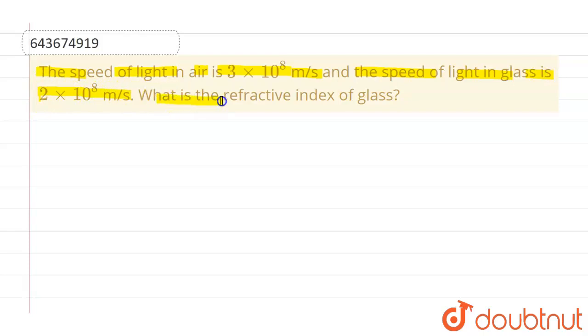Okay, so we know the formula of refractive index, which is given by: the refractive index of any medium is nothing but the speed of light in vacuum